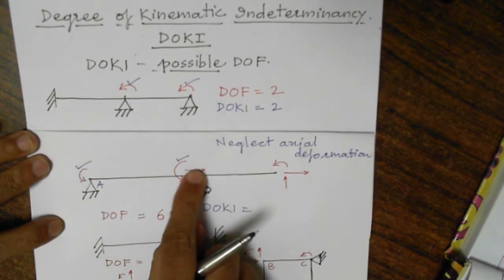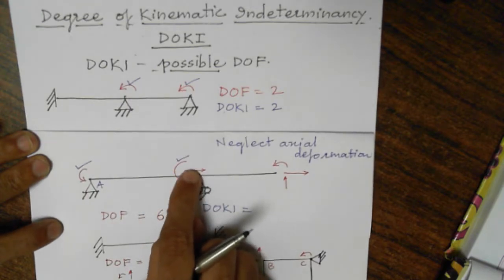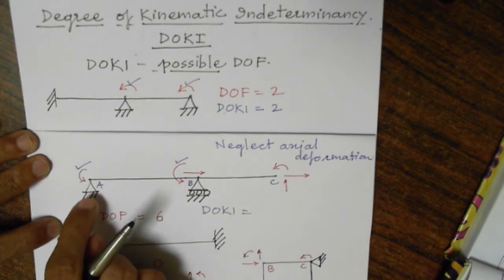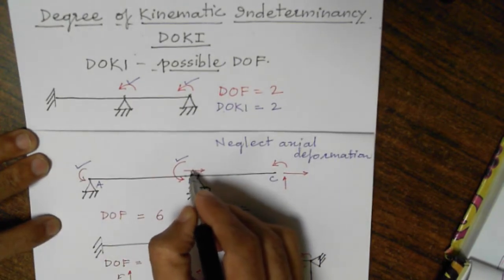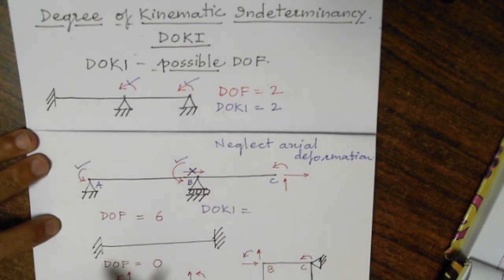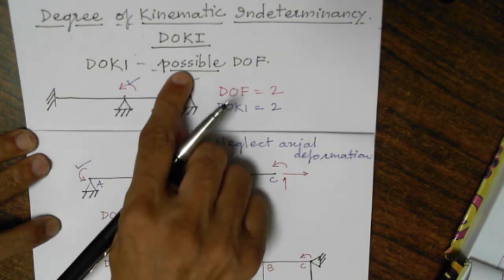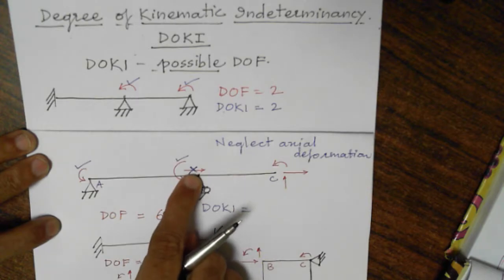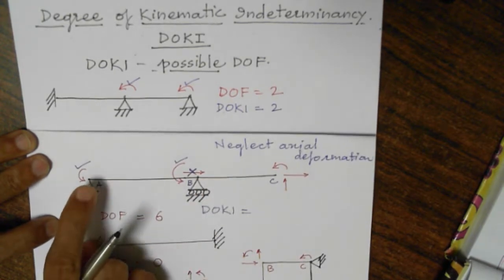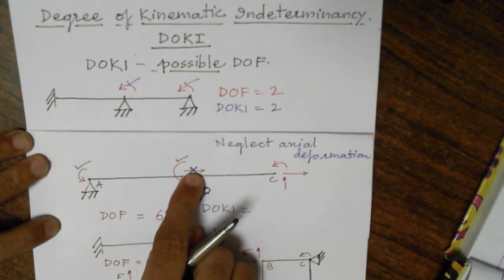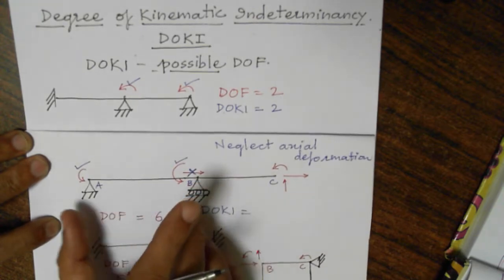Since there is no axial deformation of A-B and A is not allowed to move in x direction, B will also not be allowed to move in x direction. This is a dependent degree of freedom — the translation of joint B in x direction depends upon whether A can translate in x direction. Since translation of A in x direction is not possible, translation of B in x direction is also not possible. So this cannot be considered as degree of kinematic indeterminacy, because degree of kinematic indeterminacy means possible degree of freedom.